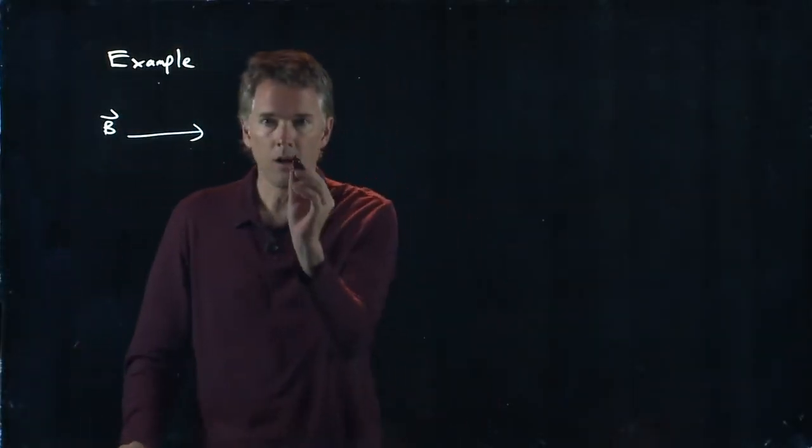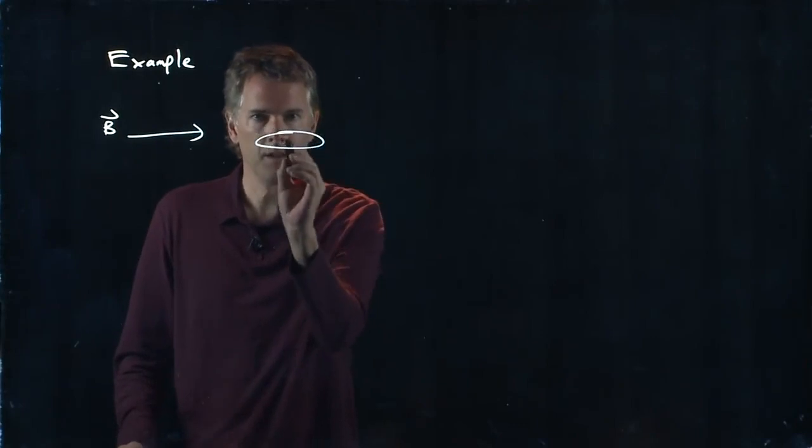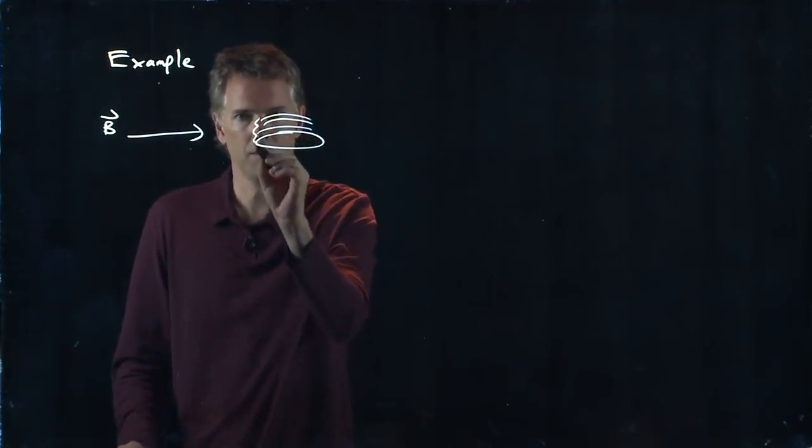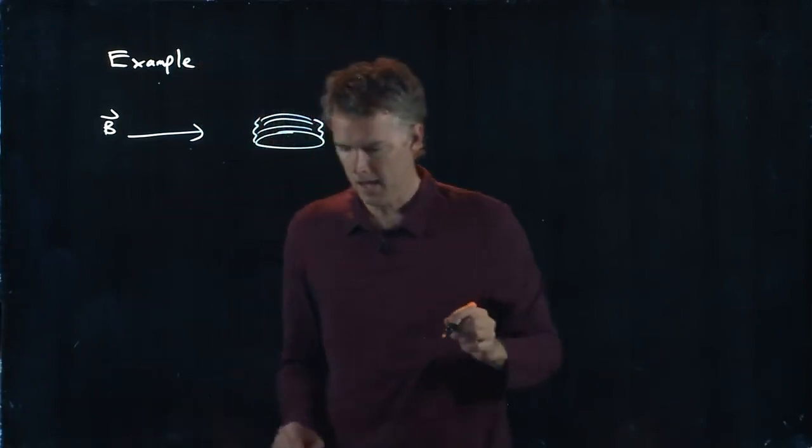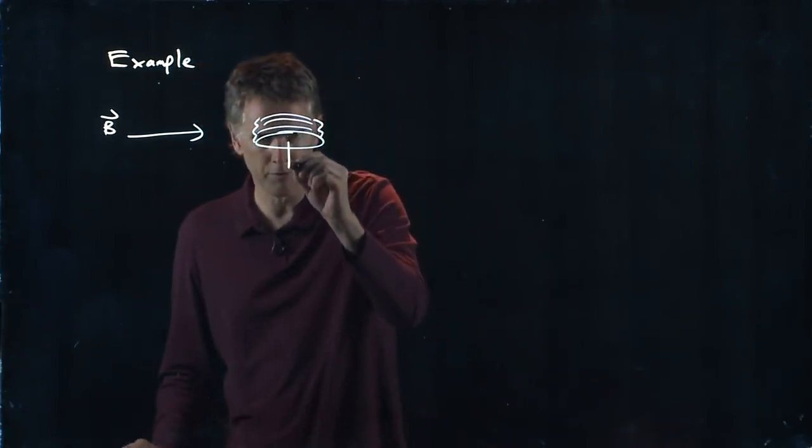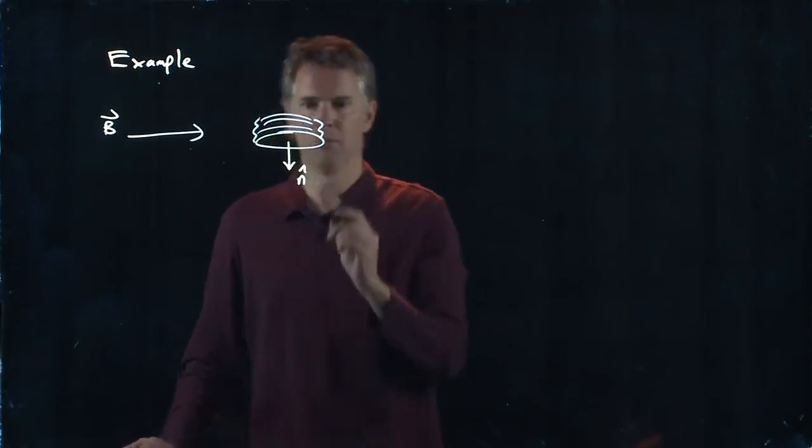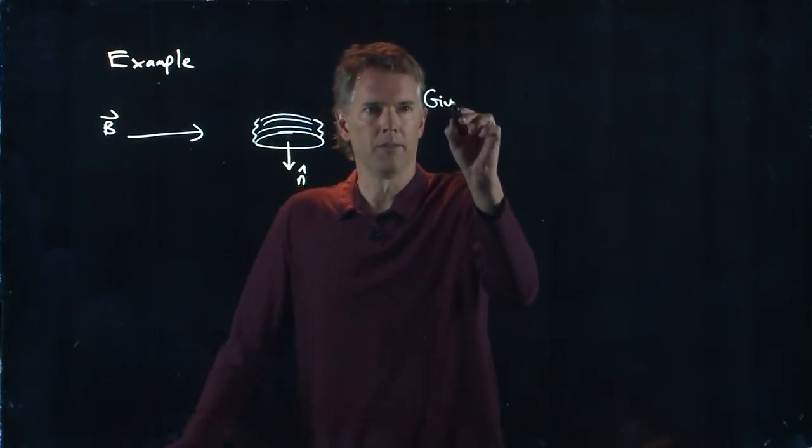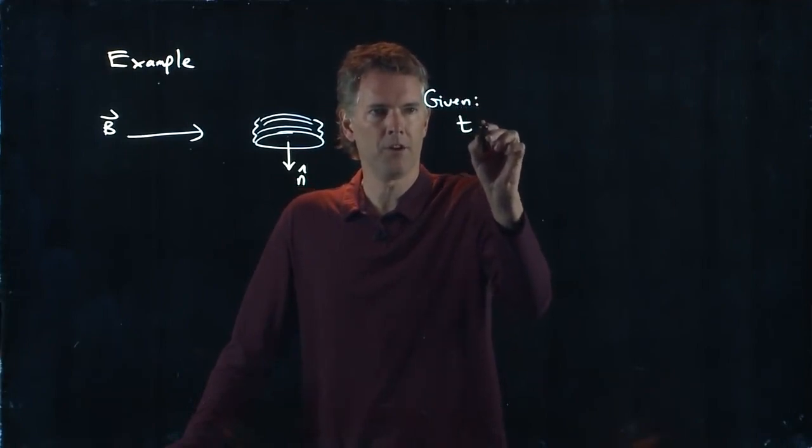This is our coil right here and there's a few different loops on it and it's pointing down. So we have our surface normal n hat pointing down and let's give you the following information when we start this experiment at t equals zero.